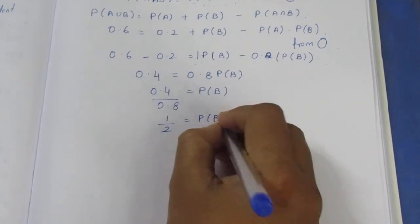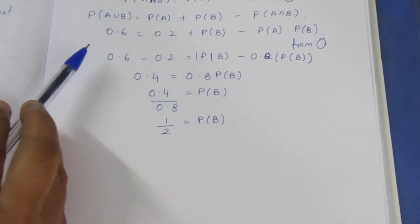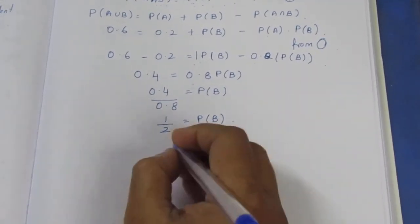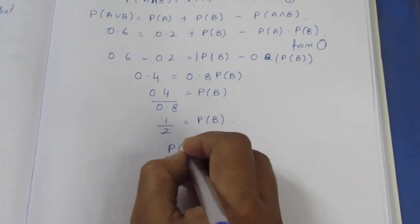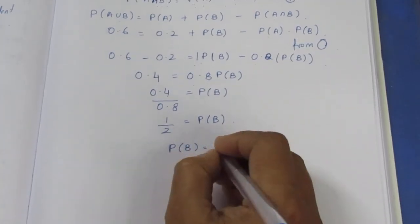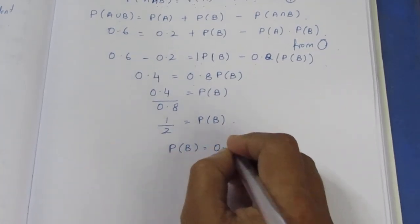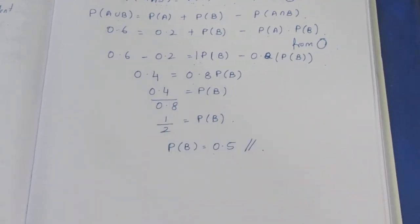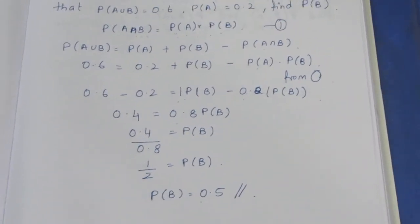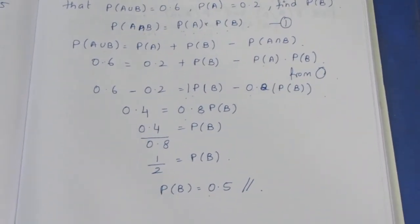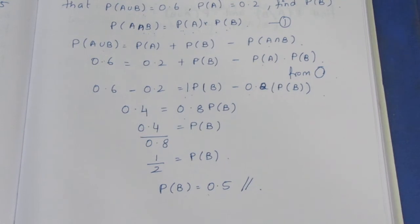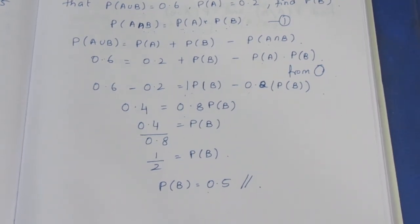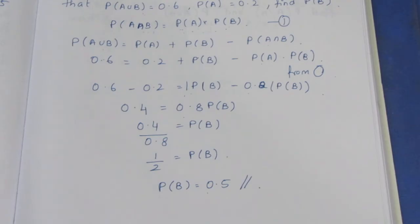Probability is solved. P of B equals 1 by 2, which is 0.5. So the final answer is P of B equals 0.5. That is the sum. Thank you.